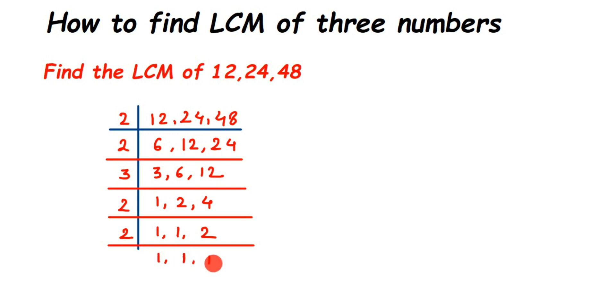Now to find out the LCM, you have to just multiply these numbers. That's it. So LCM of 12, 24, and 48 will be equal to you have to just multiply these numbers: 2 into 2 into 3 into 2 into 2.